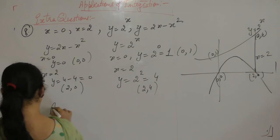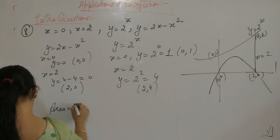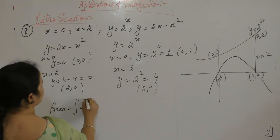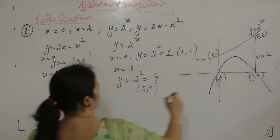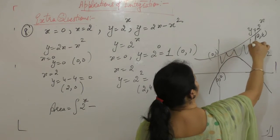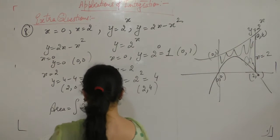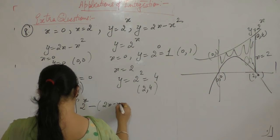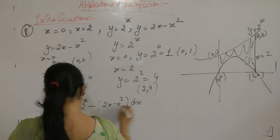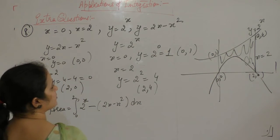area is equal to y1 curve minus, the 2 power x curve is upward, so 2 power x minus 2x minus x² dx, and the limit goes from 0 to 2. So,